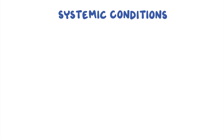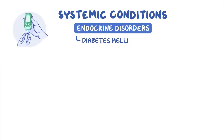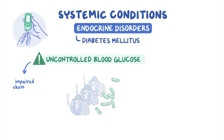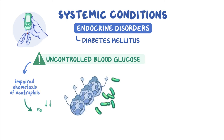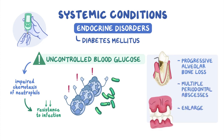Moving on to systemic conditions associated with periodontal disease. Regarding endocrine disorders, starting with diabetes mellitus: uncontrolled blood glucose levels can decrease resistance to infection by impairing the chemotaxis of neutrophils, which are the first line of defense against bacteria. Uncontrolled or poorly controlled diabetes has been associated with progressive alveolar bone loss, multiple periodontal abscesses, and enlarged gingiva.